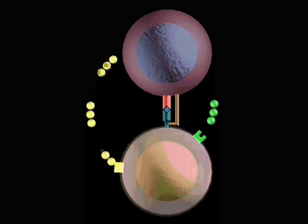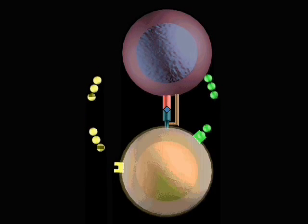The B cell then divides and differentiates into plasma cells producing antibody.